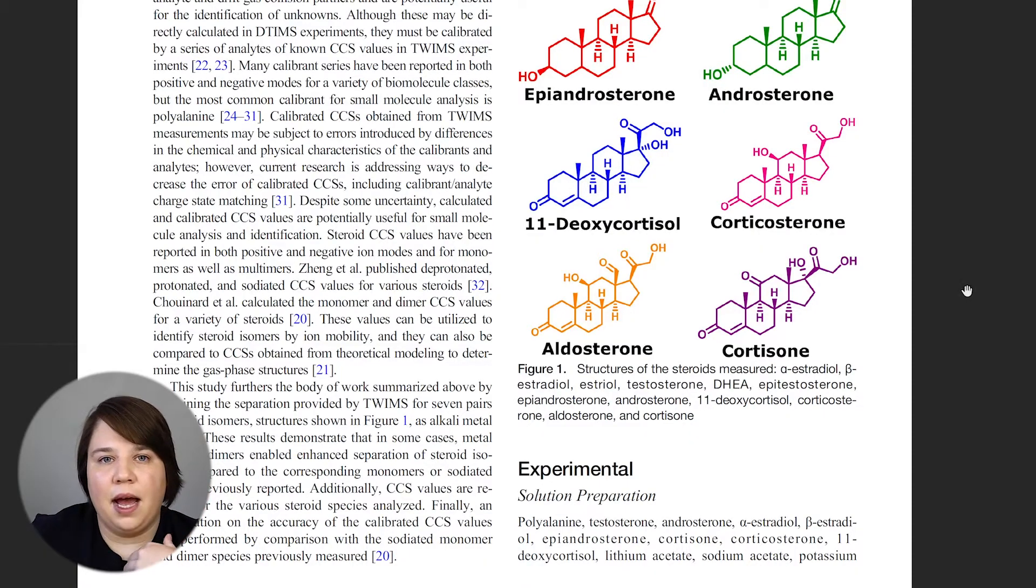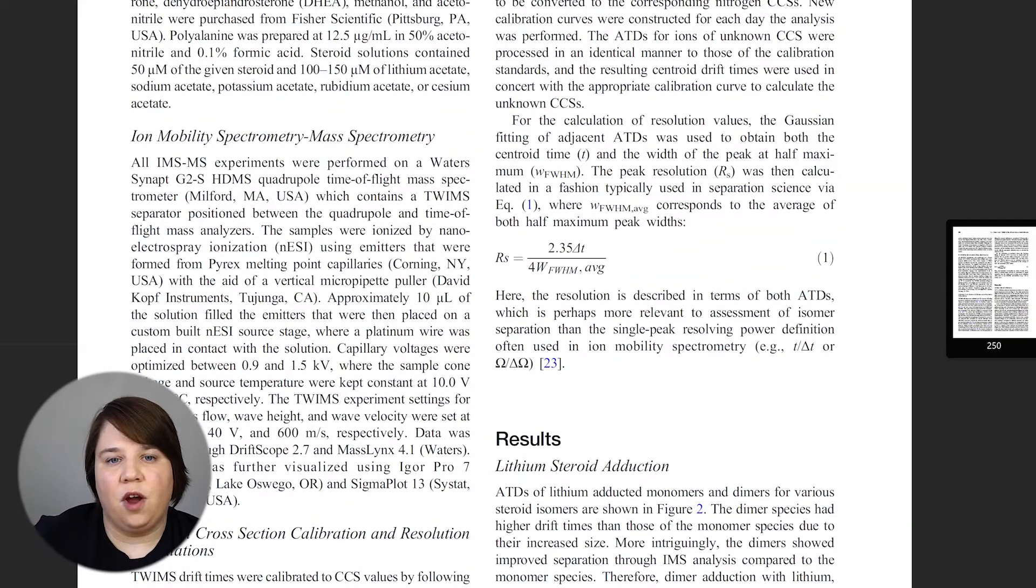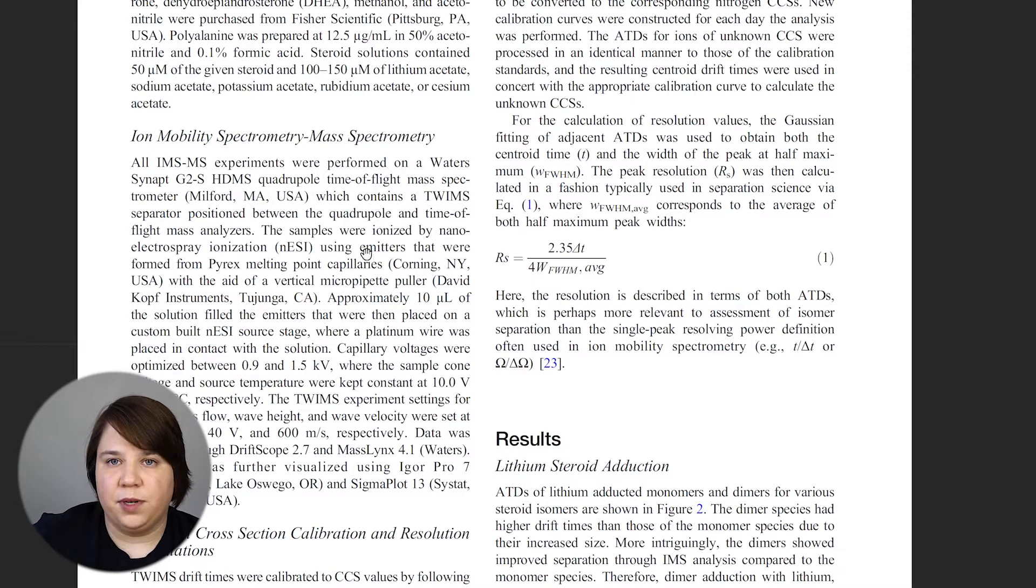So here you can see in my first published paper, I have my experimental section, and I'm just going to show you the sections I have. So the first section I have is my solution preparation, where I talk about where I got my materials from and how I made the solutions. Then I have my ion mobility and mass spectrometry section.